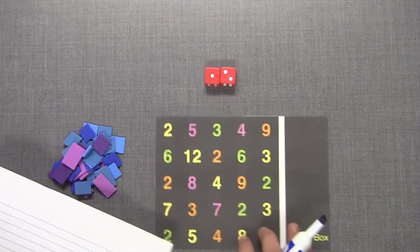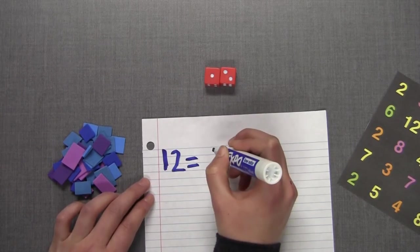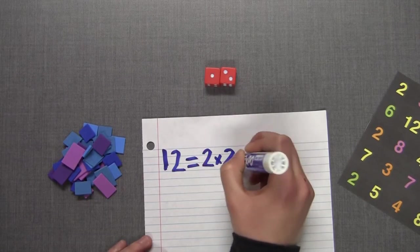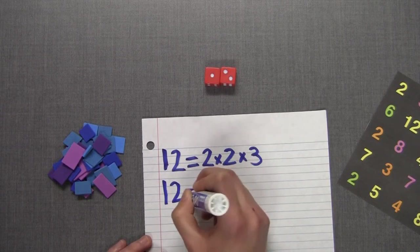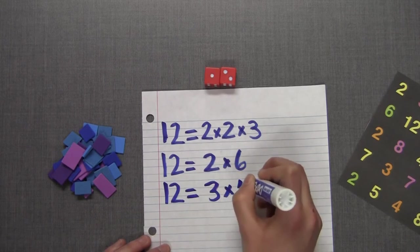List the factors of this number. For example when I roll a 12 the factors of 12 are 2, 3, 4, 6, and 12. This is because 2 times 2 times 3 equals 12, 2 times 6 equals 12, and 3 times 4 equals 12.